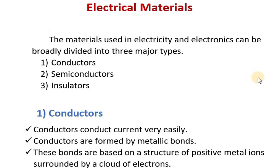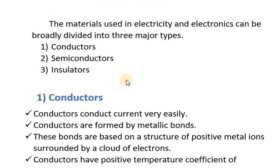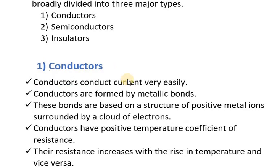Hello friends, today we learn about electrical materials. The material used in electricity and electronics can be broadly divided into three major types. By purpose of electricity transferring, distribution, and making of various electronics devices, there are three major types of electrical materials. First is conductors, second is semiconductors, and third is insulators. Now we discuss each type.